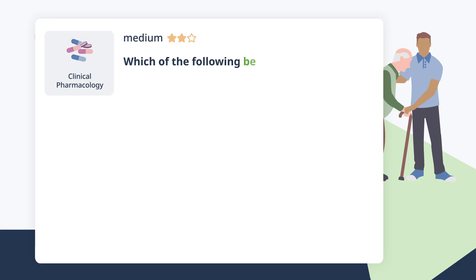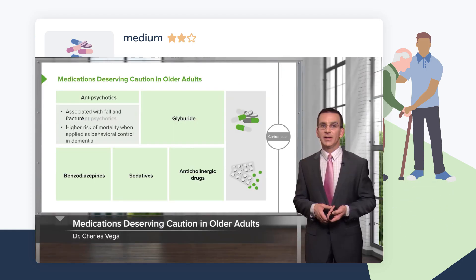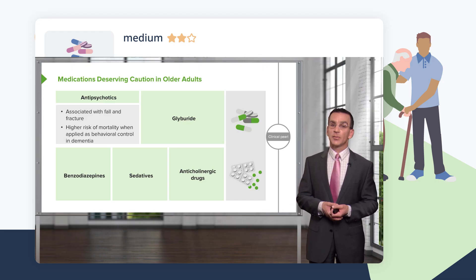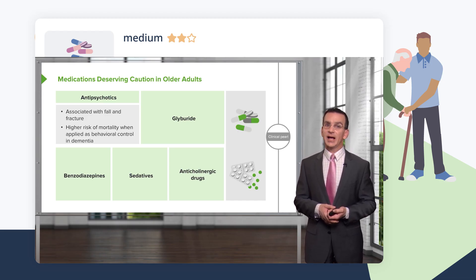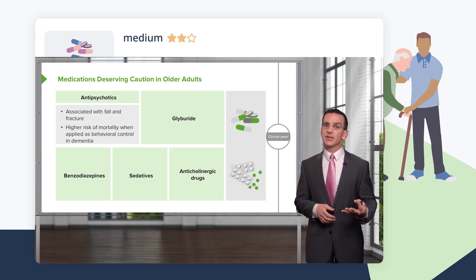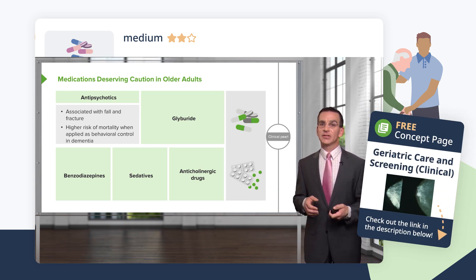Which of the following best reflects current recommendations regarding antipsychotic therapy for agitation in dementia in older adults? Antipsychotics are associated with higher risk of falls, fractures, and overall mortality, so they should be avoided except when absolutely necessary for severe agitation in dementia. Shared decision-making with the family is essential — for example, weighing whether medication keeps the patient at home versus the associated higher risk of death.